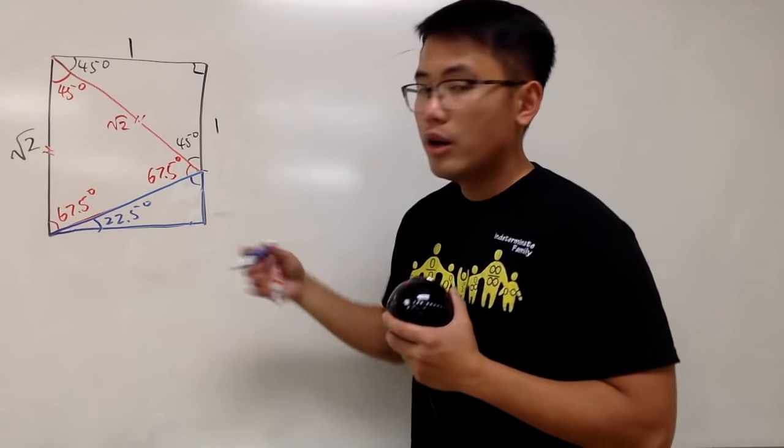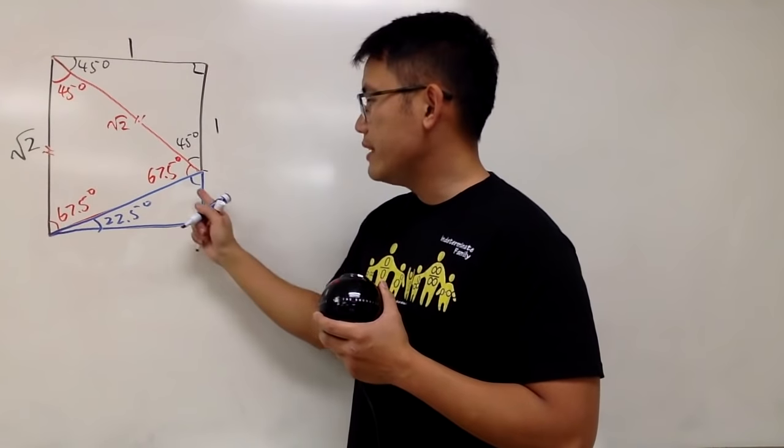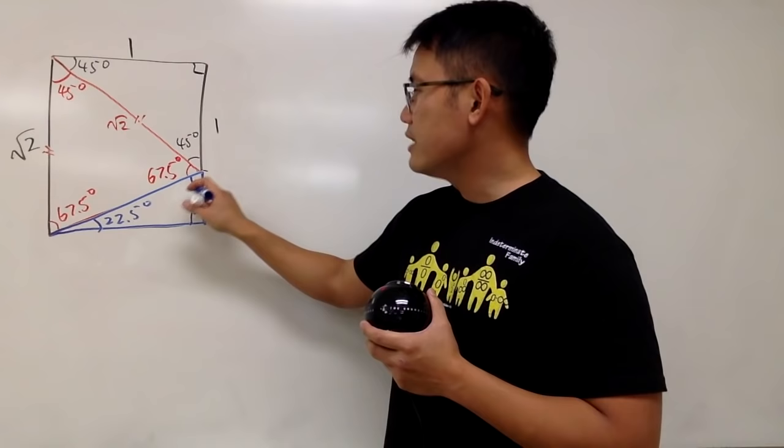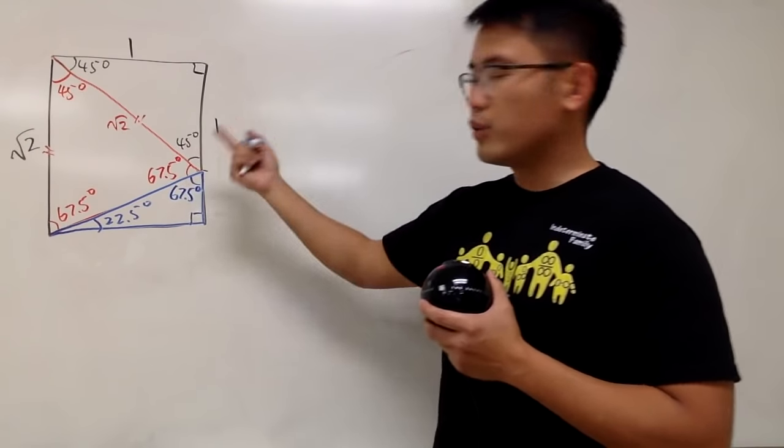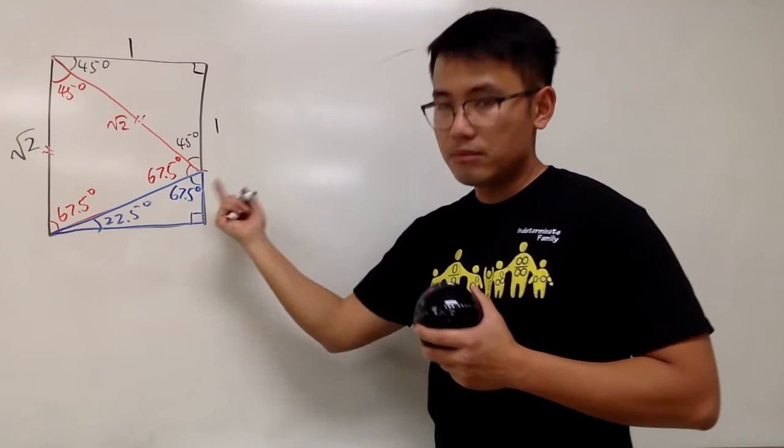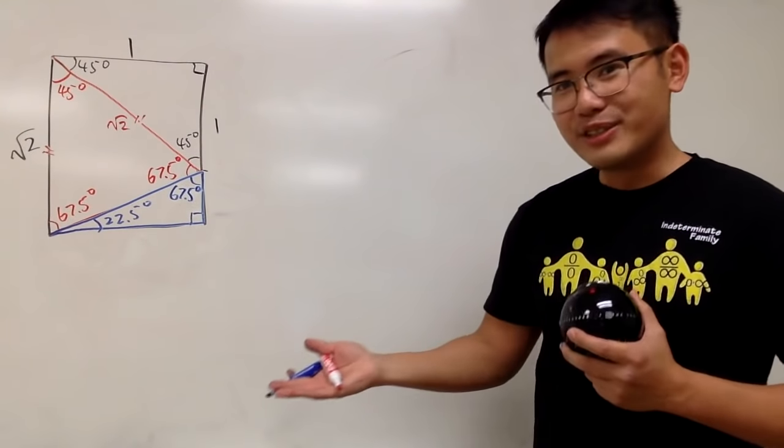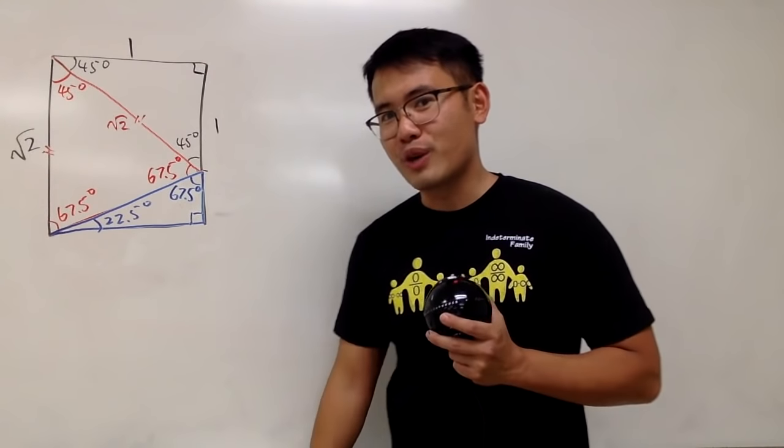And for the angle here, of course, we can just do 180 degrees minus this minus 90. And this right here will just give us 67.5 degrees. Or you can do 180 minus this minus that. Same thing, right? So as you can see, this right here is actually our special right triangle.